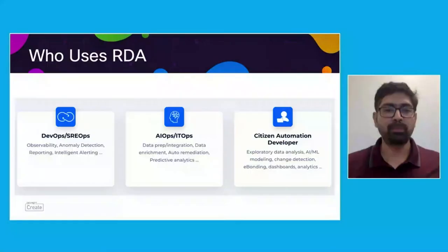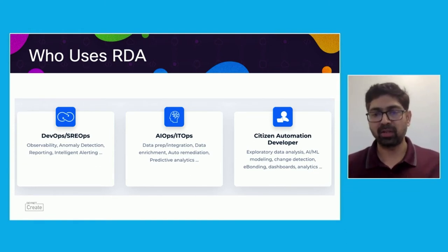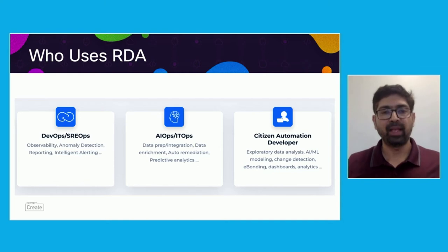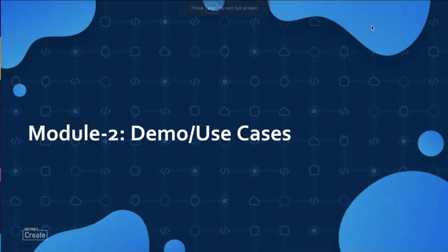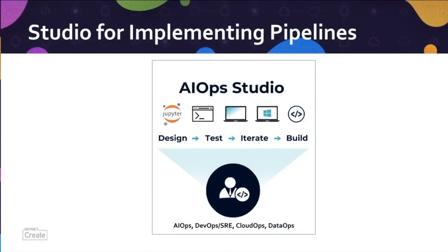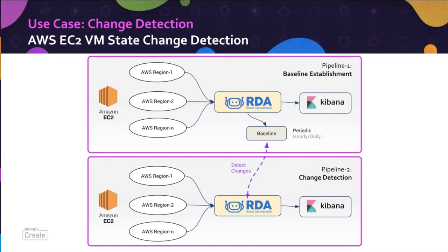Who uses RDA? Primarily DevOps or SRE ops personnel, AI ops or IT ops teams, or even citizen automation developers can use RDA. It is very easy to implement these pipelines and make changes. To implement pipelines, we have a tool called AIOps Studio where you can design, test, iterate, and build all your pipelines. In this scenario, we can detect changes happening in an AWS EC2 environment. Let us see how it works.